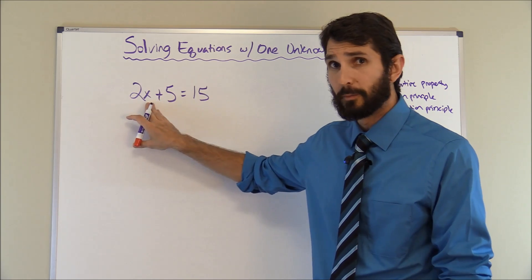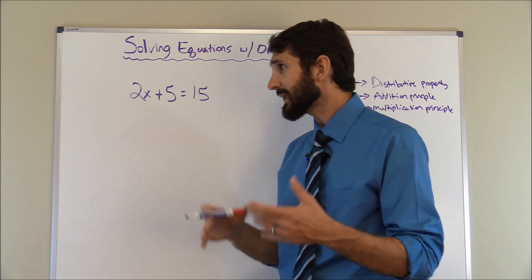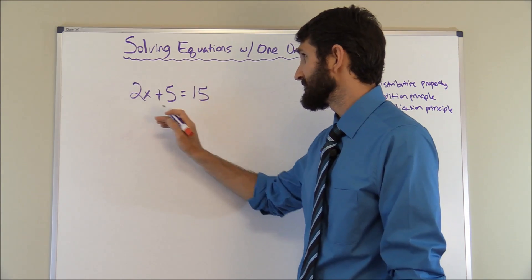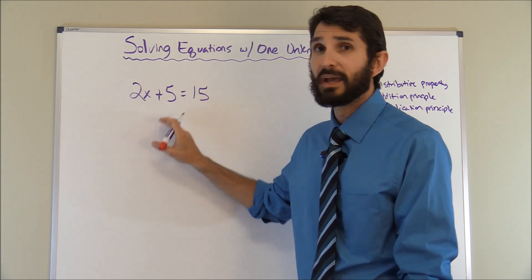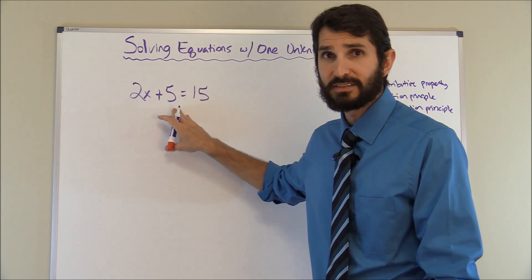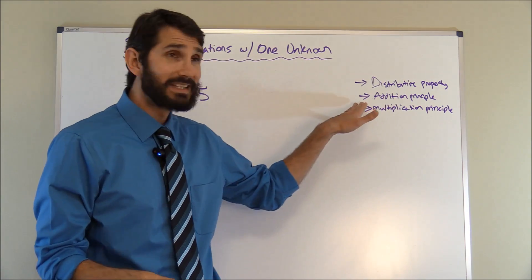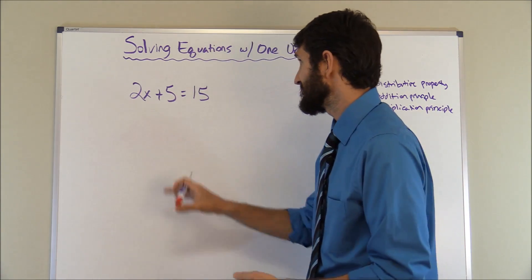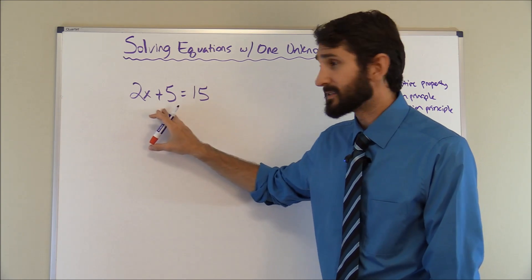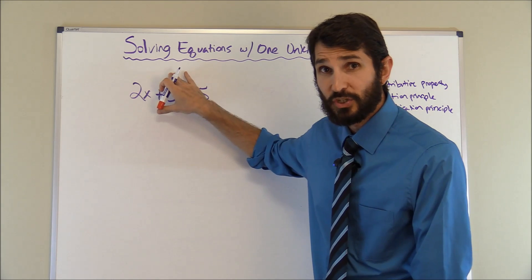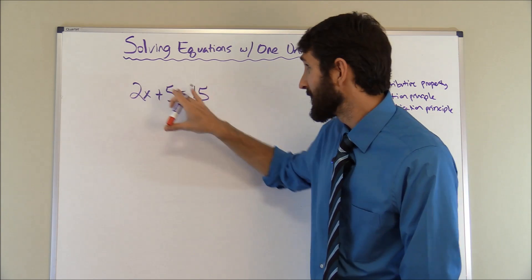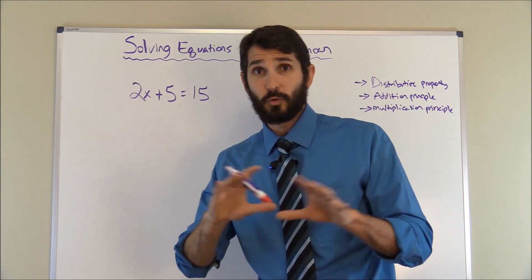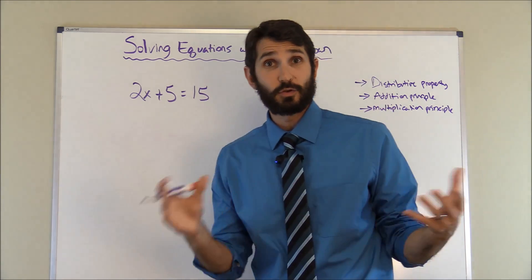This equation is saying two times some number plus five equals 15. We're trying to get X on one side and the number on the other side. The first thing I see here is a plus five. Anytime you have just a number like plus five or minus five, you can use a rule called the addition principle. The addition principle states that whenever you have a plus or minus number, you can do the opposite on this side of the equation to cancel it out — but whatever you do to one side, you also have to do to the other side.